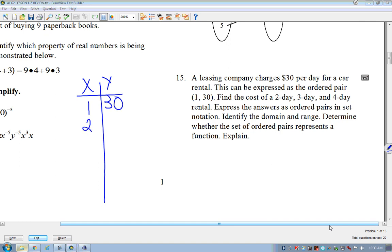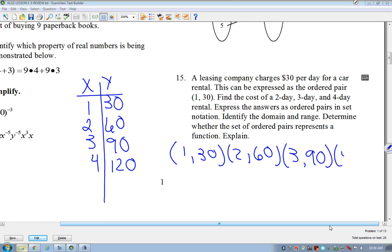How much is it going to cost for the second day? 60. Day three? 90. Day four? 120. Okay. So if we want to express our answers in ordered, it says ordered pairs in set notation, it would be 1, 30, 2, 60, 3, 90, 4, 120. Okay. So that's our set notation.